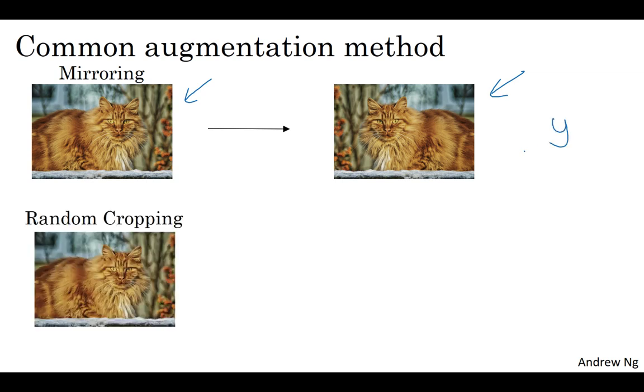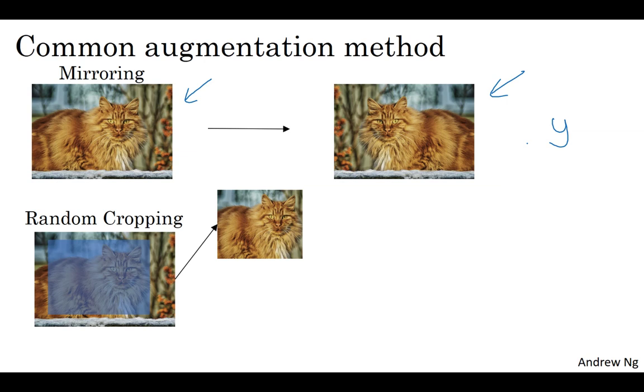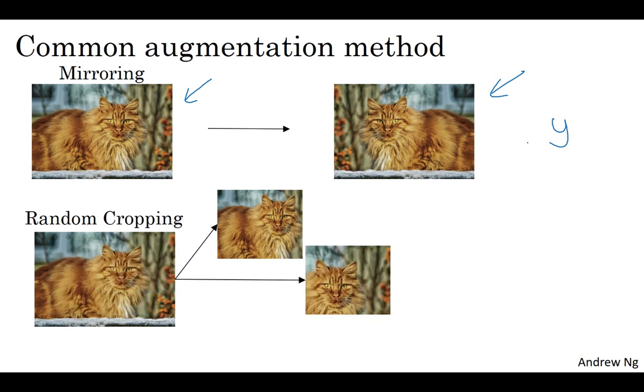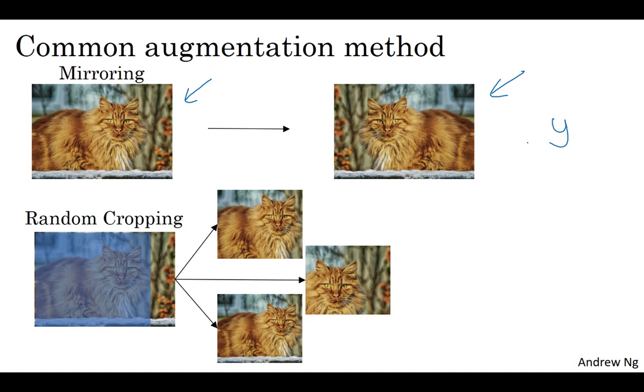Another commonly used technique is random cropping. So given this data set, let's pick a few random crops. You might pick that and take that crop. You might take that, take that crop. Take this, take that crop. And so this gives you different examples to feed into your training set, with different random crops of your data set.